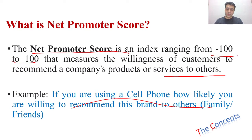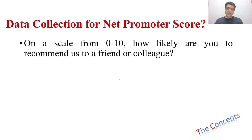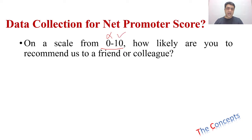How do we collect data, or how do companies collect data for net promoter score? It is very simple — you just ask a question from your customers on a scale of 0 to 10. Zero means the lowest and 10 means the highest: how likely are you to recommend us to a friend or a colleague?